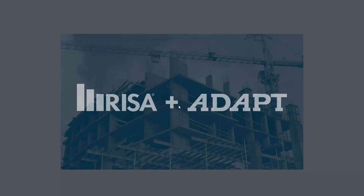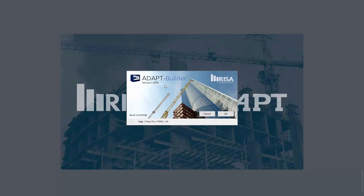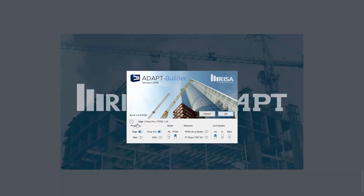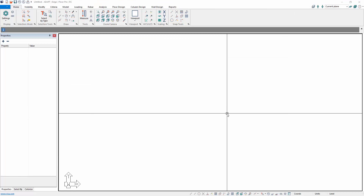This sneak peek video will explore new options coming in ADAPT Builder 2020 with respect to floor strip layout, column strip, and middle strip. We're going to launch ADAPT Builder — this is more specific to the RC mode of the program, so we'll switch from PTRC to RC. It's important to note that these features are also available in PTRC mode. We'll select RC and OK to open the interface.